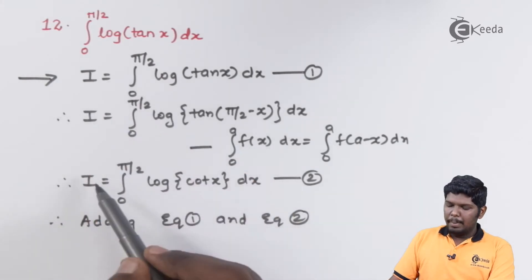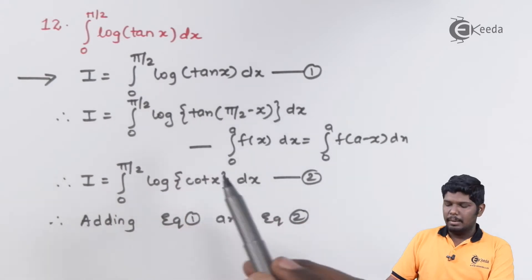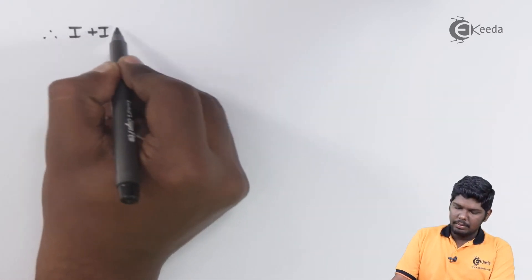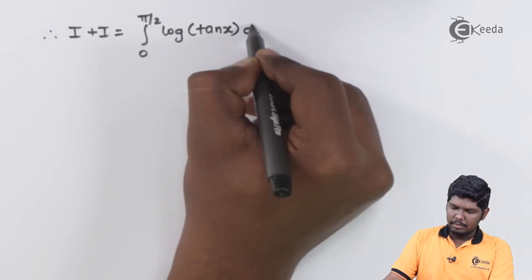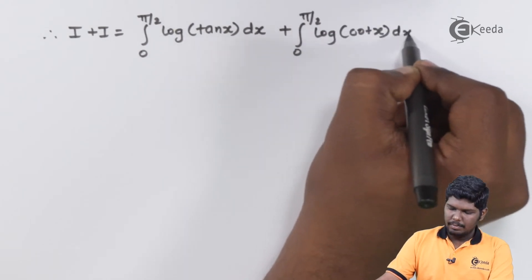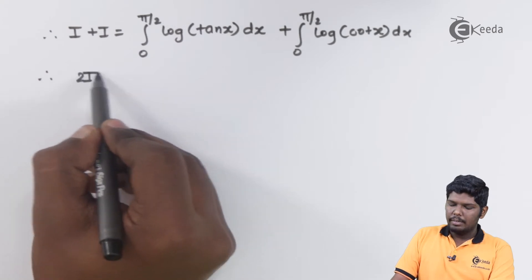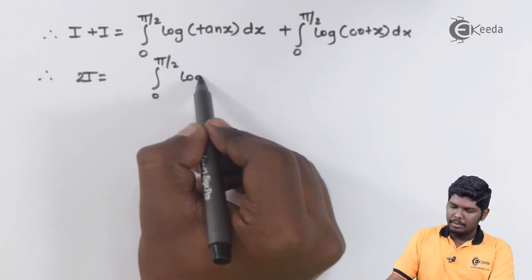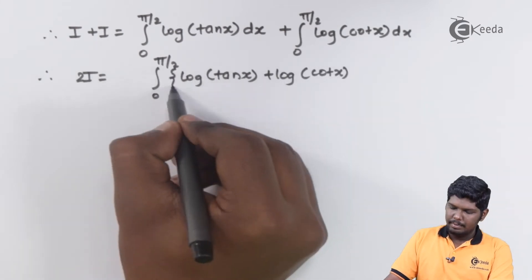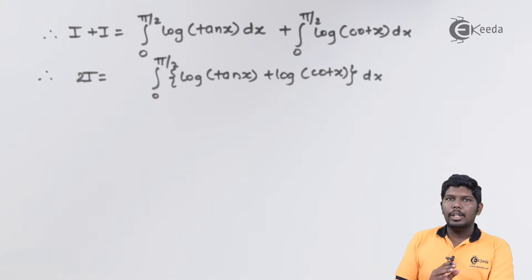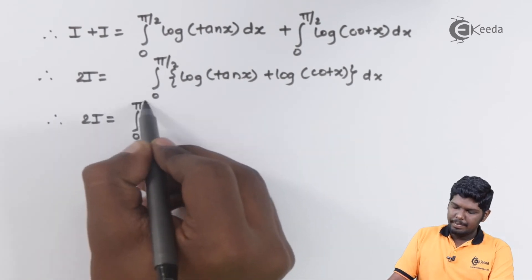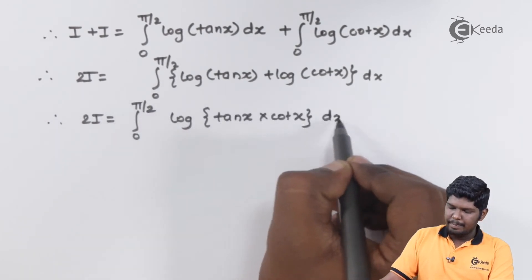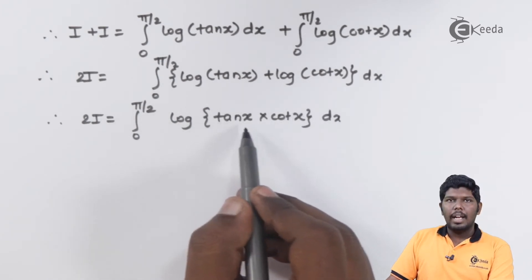This will give you i plus i is equal to integral log of tan x plus integral log of cot x. On left hand side we have i plus i is equal to 2i and on the right hand side since the limits are same we can add these two integrals. This will give you 2i is equal to integral 0 to pi by 2 log of tan x plus log of cot x dx. Here you can use the formula of log a plus log b that will give you log ab.